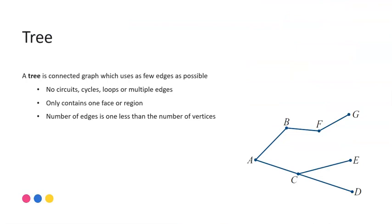So firstly, what is a tree? In networks, a tree is a connected graph which uses as few edges as possible. We can see an example here. Some key features is that our tree will have no circuits, no cycles, no loops and no multiple edges.